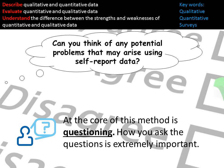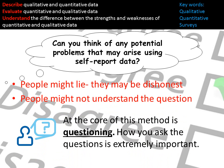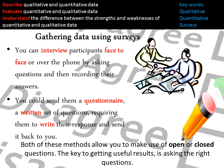Think about the problems that may arise from using self-report data. Participants might lie or be dishonest, particularly if you're asking them about something like racism or prejudice. Social desirability — their desire to get it right socially — might mean that they say they're not prejudiced when actually that's not true. Or people might not understand the question and therefore not give you a correct answer.